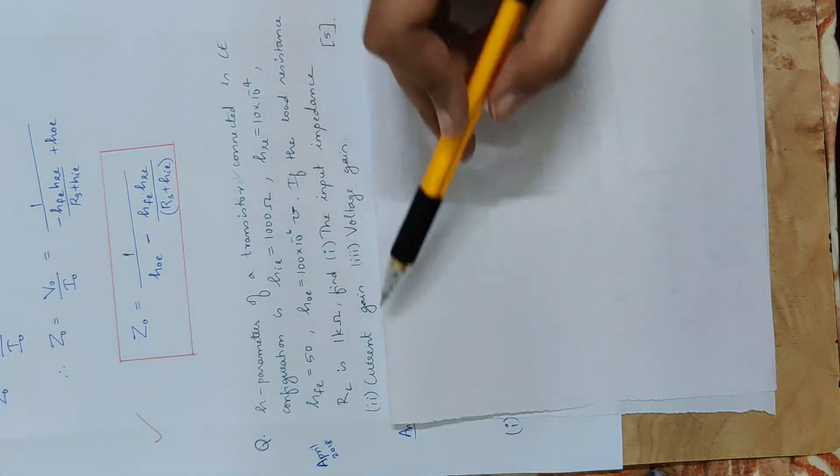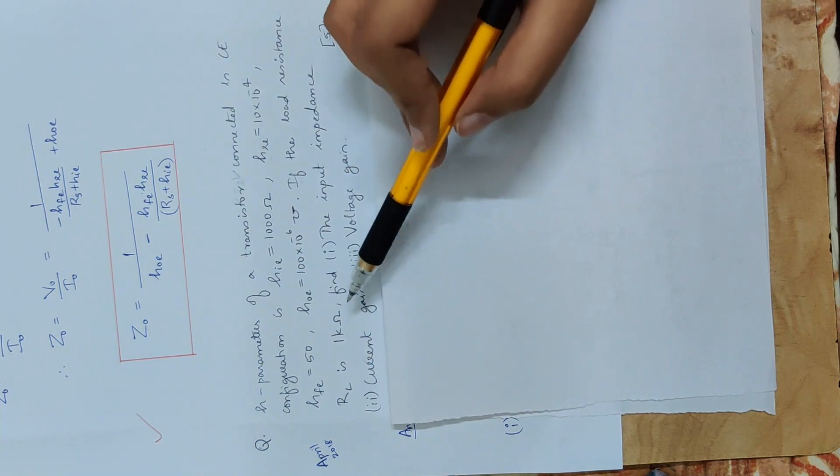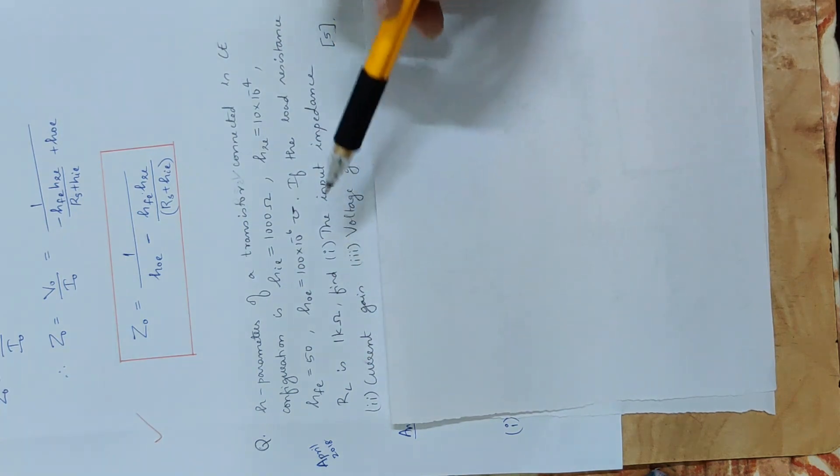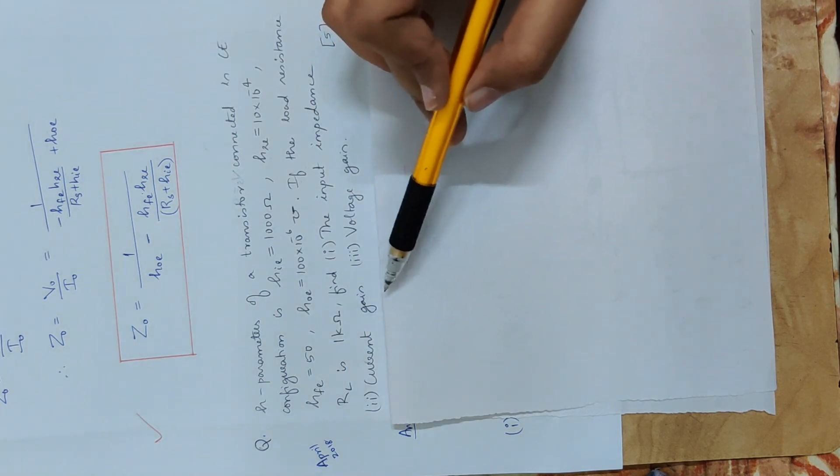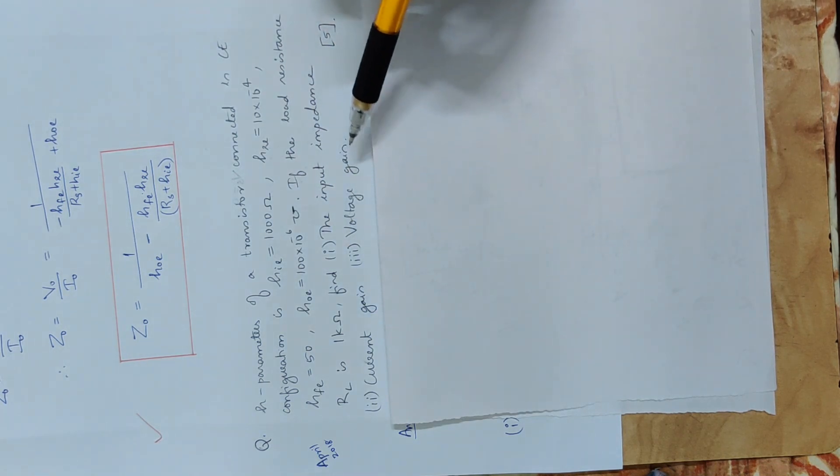If the load resistance RL is 1 kilo Ohm, find input impedance ZI, current gain AI, voltage gain AV. This is the question.